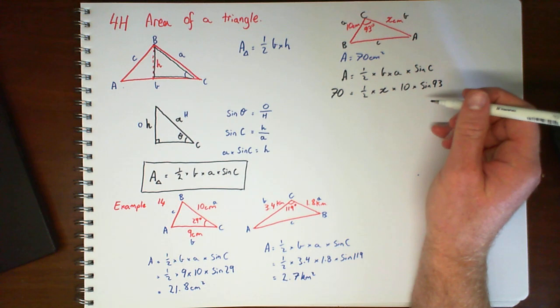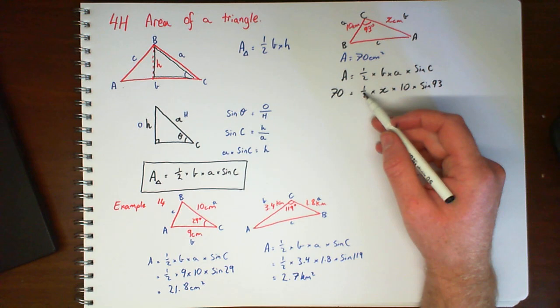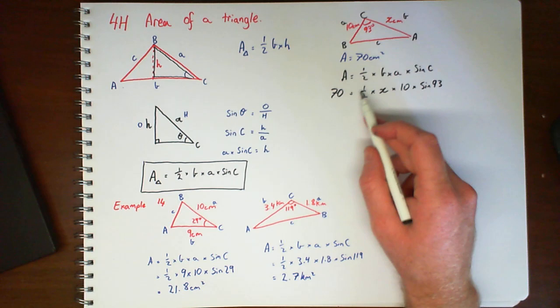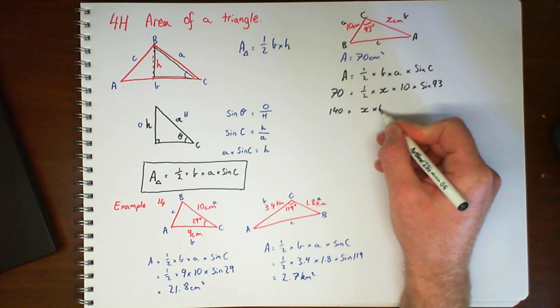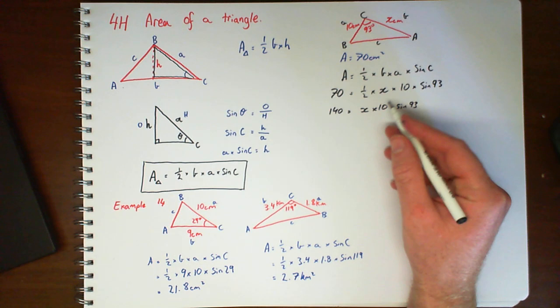Now it's just a matter of some backtracking. So first thing I would probably do is multiply everything by 2 to get rid of this half. So we get 140. And then I would be dividing by 10 to get rid of the 10.